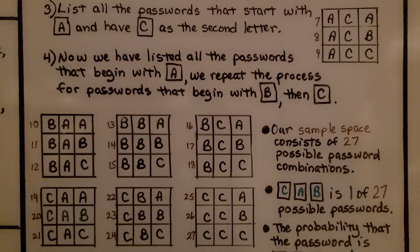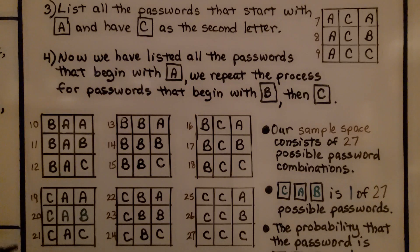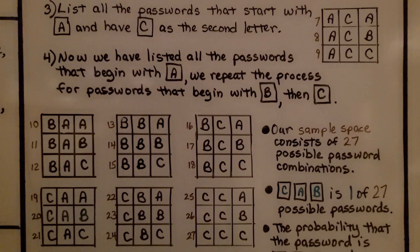Now that we've listed all the passwords that begin with A, we repeat the process for passwords that begin with B. Then, we list the passwords that begin with C. And, we see there's twenty-seven possible passwords. Our sample space consists of twenty-seven possible password combinations.